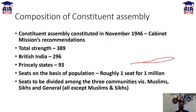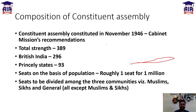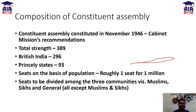When was the Constituent Assembly constituted? It was in November 1946. This question has already been asked in exams - the Constituent Assembly was created in November 1946 based on the recommendations of the Cabinet Mission. The total number of members was 389.